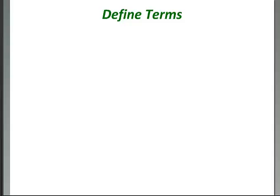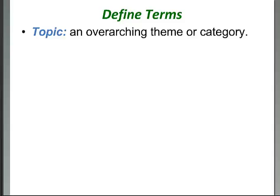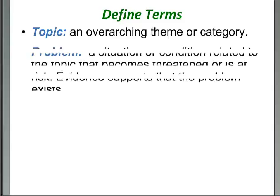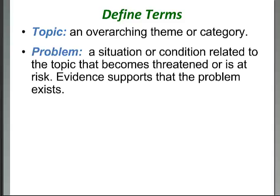Here are a few terms to help you develop an environmental issues project. This webinar is being recorded so feel free to review it later. First, a topic is an overarching theme or umbrella category — Hands on the Land has been revising their hot topics on the website. Next, a problem is a situation or condition related to the topic in which something becomes threatened or at risk, and critically, there is evidence to support that the problem exists — everyone agrees the problem is out there, like the Apollo 13 situation: Houston, we have a problem.